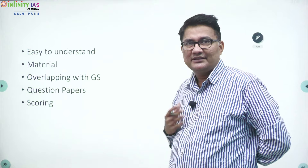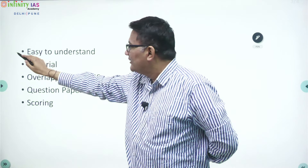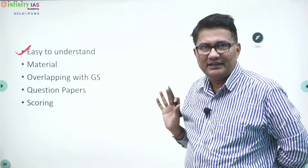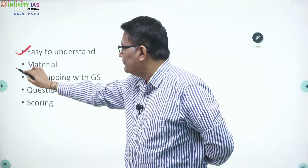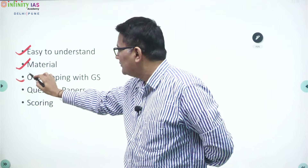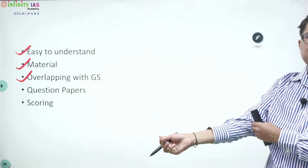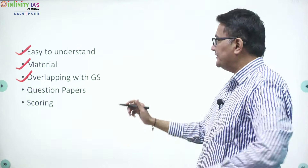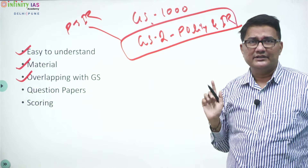Why is it a popular choice? Let us see. First point: political science is comparatively easy to understand. Second: enough material on political science is available. Third: it is overlapping with GS. How much part is overlapping with GS? GS is there for thousand marks, but GS 2 — General Studies Part 2 — covers polity and international relations, and this entire part is overlapping with political science optional.